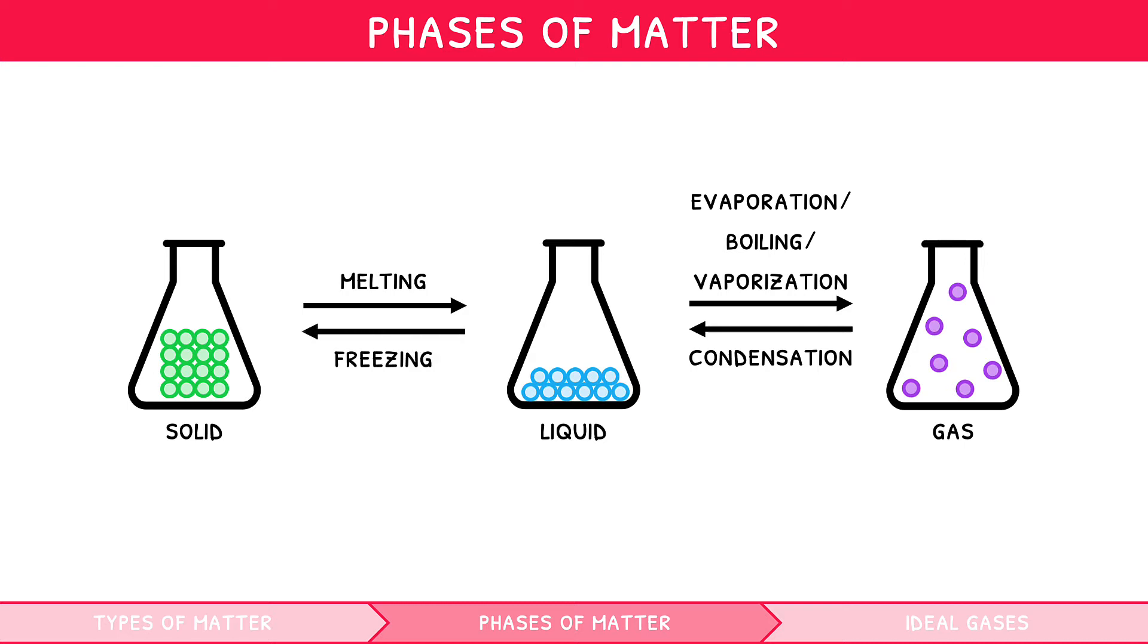There are also two advanced processes that you need to be aware of. The first of these is when a solid changes into a gas without forming a liquid intermediate. This is called sublimation. The second process is the opposite of this, i.e. when a gas turns straight into a solid without forming a liquid intermediate. This is known as deposition.